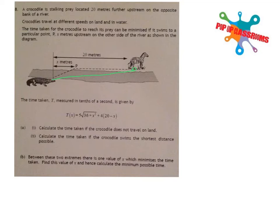The first part says the time taken T is measured in tenths of a second as given by this relationship. We've got to calculate the time taken if the crocodile does not travel inland. So if it doesn't travel inland, it's basically going to swim upriver and get out at that point. That means X is going to be 20, so we're going to work out T of 20, which gives us 10.4 seconds. You'll actually get 104, but that's 104 tenths of a second, so that would be 10.4 seconds.